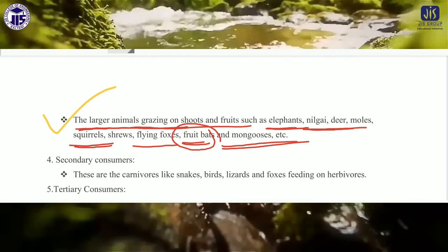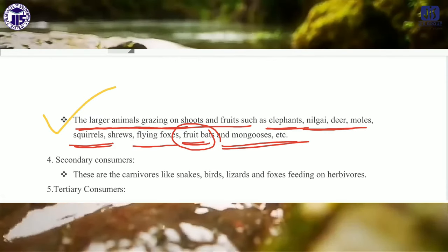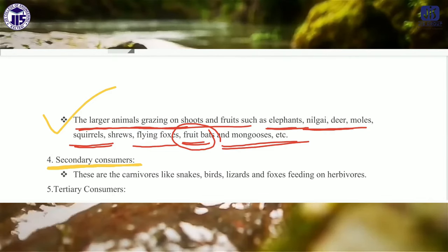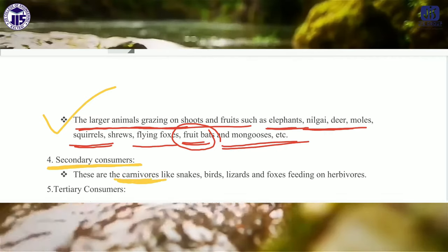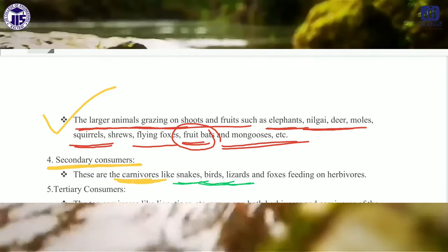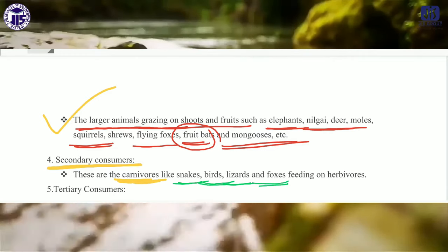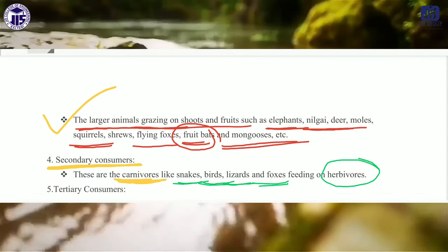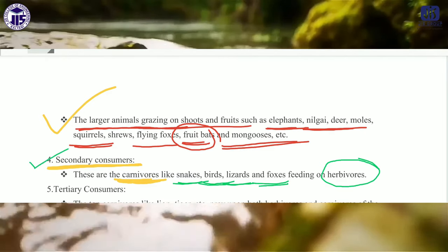Secondary consumers depend on the primary consumers. Examples of secondary consumers are carnivores — it may be snakes, birds, lizards, or fox — who feed the herbivores. The herbivores are obviously the primary consumers, so those that feed on them are called secondary consumers.